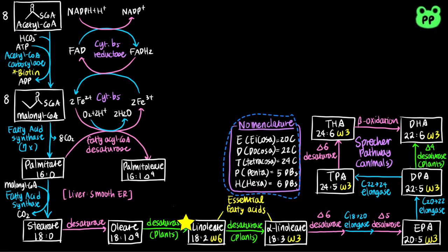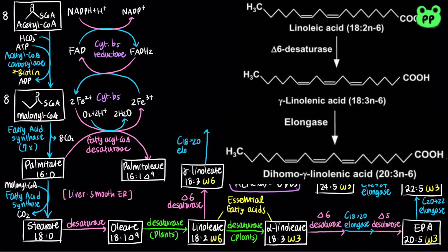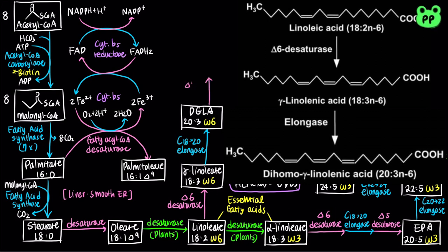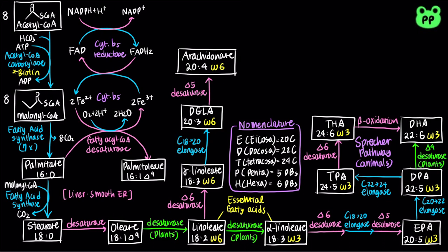On the other hand, linoleate serves as a precursor to other omega-6 polyunsaturated fatty acids. First, linoleate is desaturated at the 6th carbon to form gamma-linolate, which is subsequently elongated to the 20-carbon dihomo-gamma-linolenic acid, abbreviated as DGLA. Desaturation of the 5th carbon of DGLA produces arachidonate, which is a 20-carbon omega-6 fatty acid with 4 double bonds at the 5th, 8th, 11th, and 14th carbons.